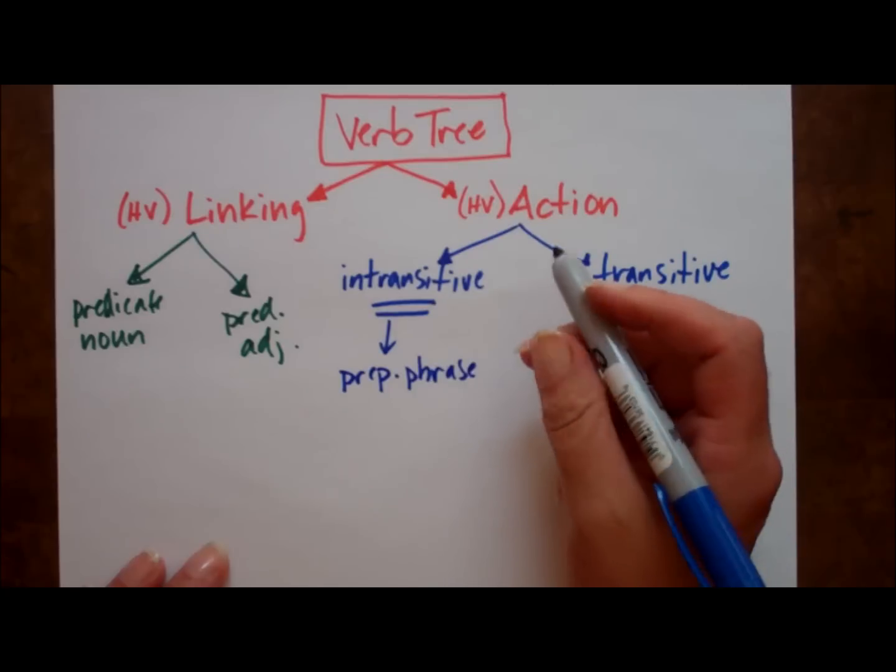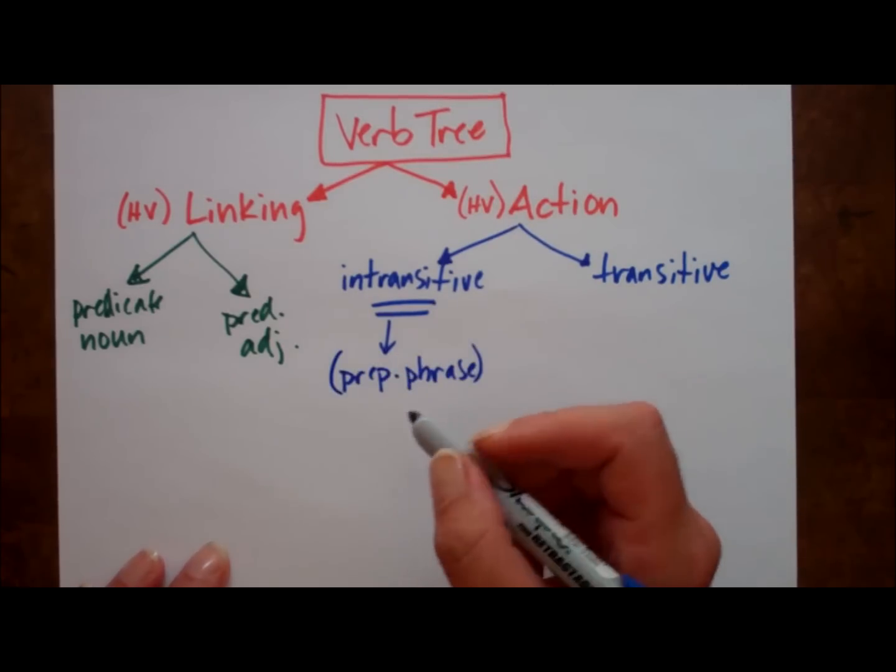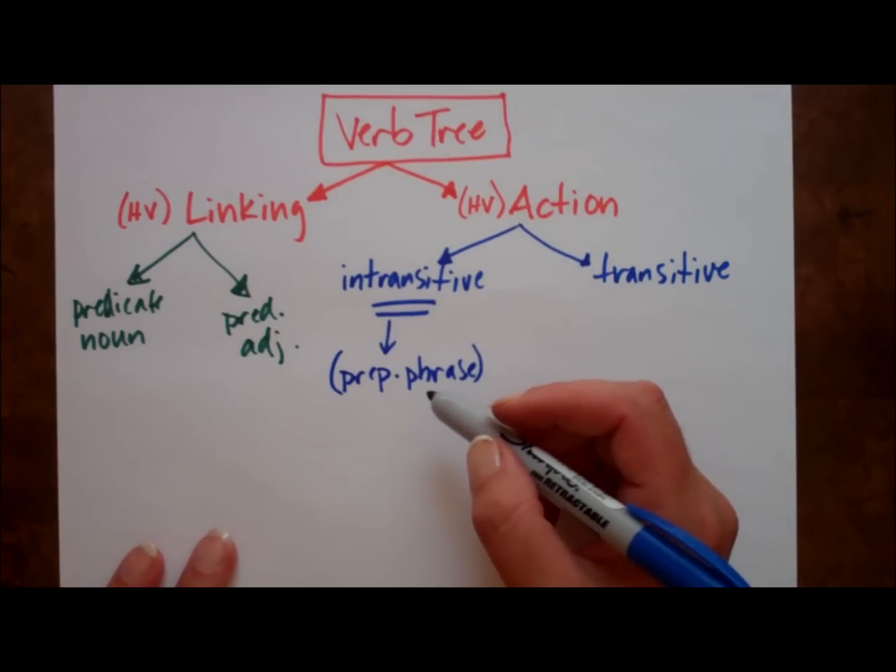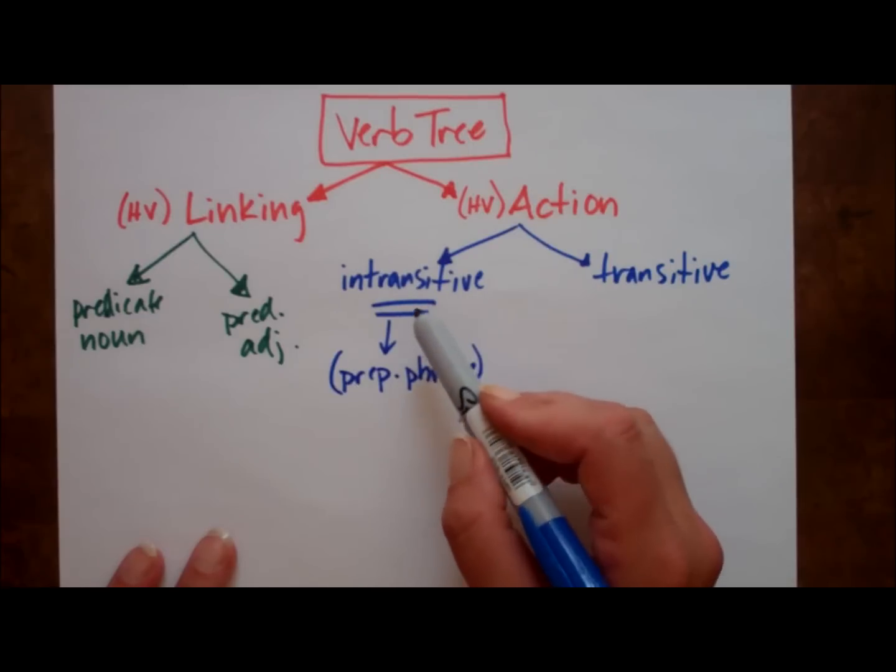But remember that often an intransitive verb will be followed by a prepositional phrase. Because the prepositional phrase isn't necessarily there, we're going to put it in parentheses to remind ourselves. Don't be tricked into thinking that the object of the preposition is a direct object. Intransitive verbs are complete by themselves.